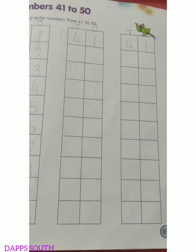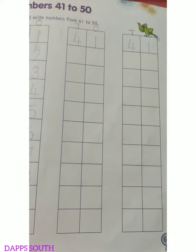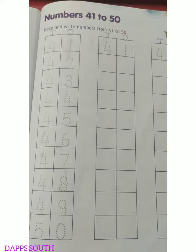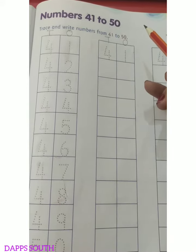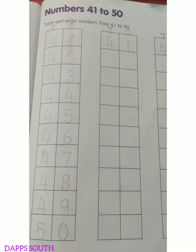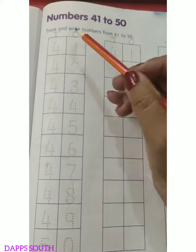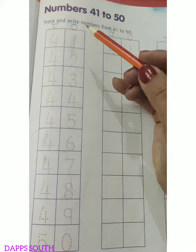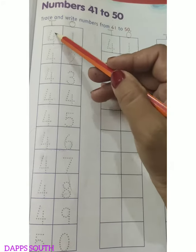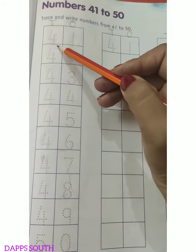So children, this is your book page number 69. And today ma'am will learn numbers from 41 to 50. So what do we need to keep taking care of numbers? We need to follow the 10s and 1s concept. And when we write numbers, we start from middle and bottom line.